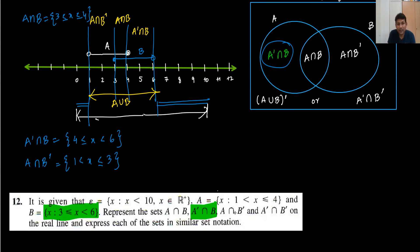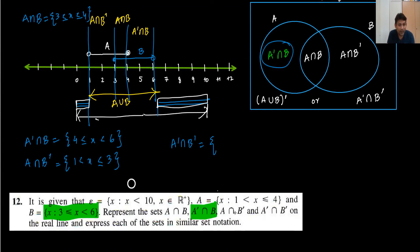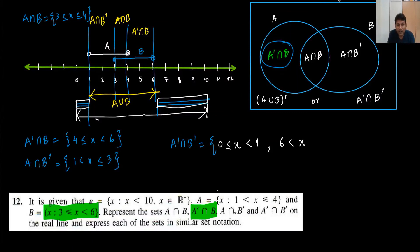Next part: A complement intersection B complement. This is the area outside both A and B. There are two sub-regions. First, from 0 to 1 — at 1 the circle is open so it is only less than: 0 ≤ X < 1. Second, from 6 onwards — at 6 there is only an open circle, and this goes up to 10 which is also less than: 6 < X < 10. By this way we have done question number 12 using the number line.